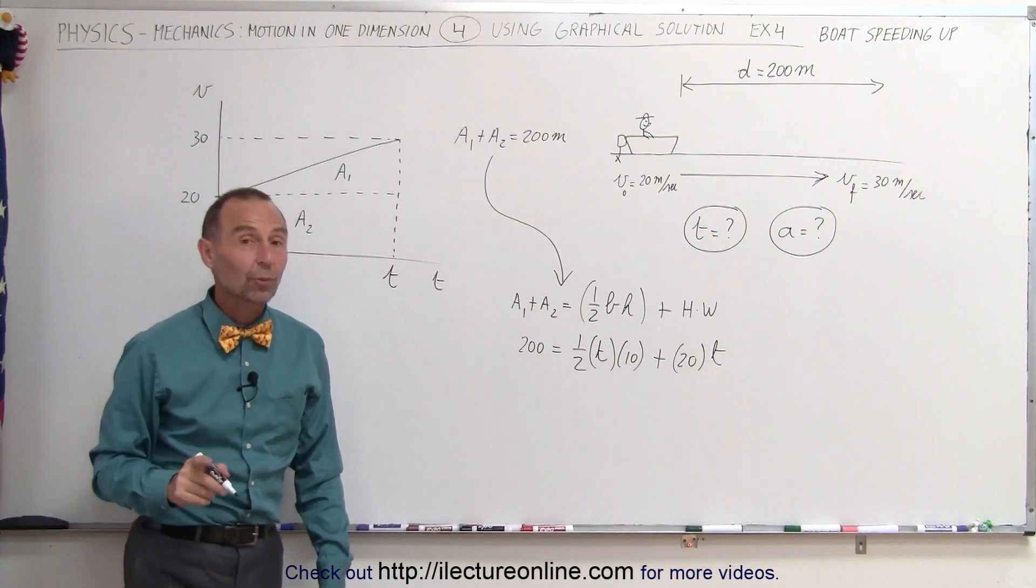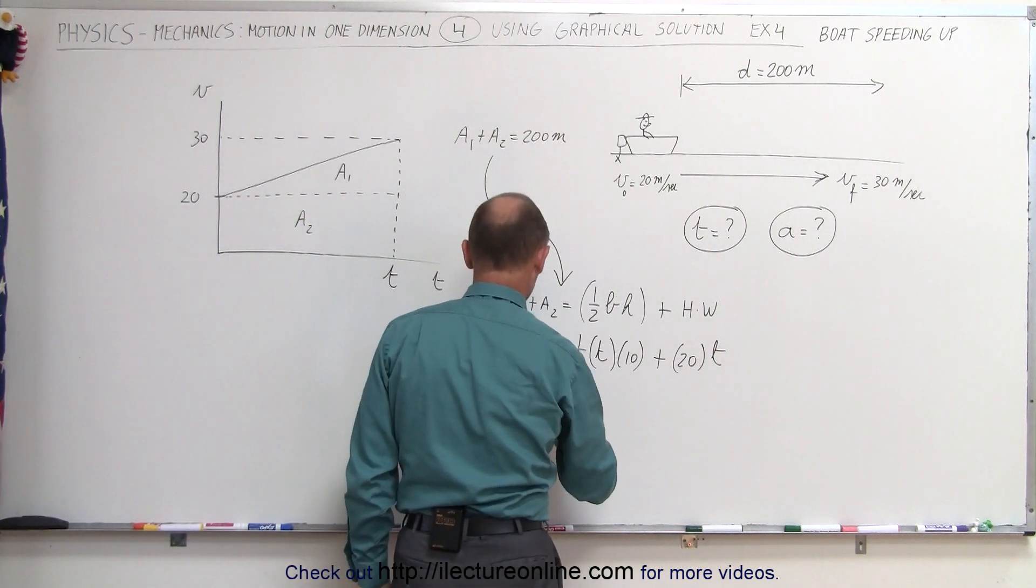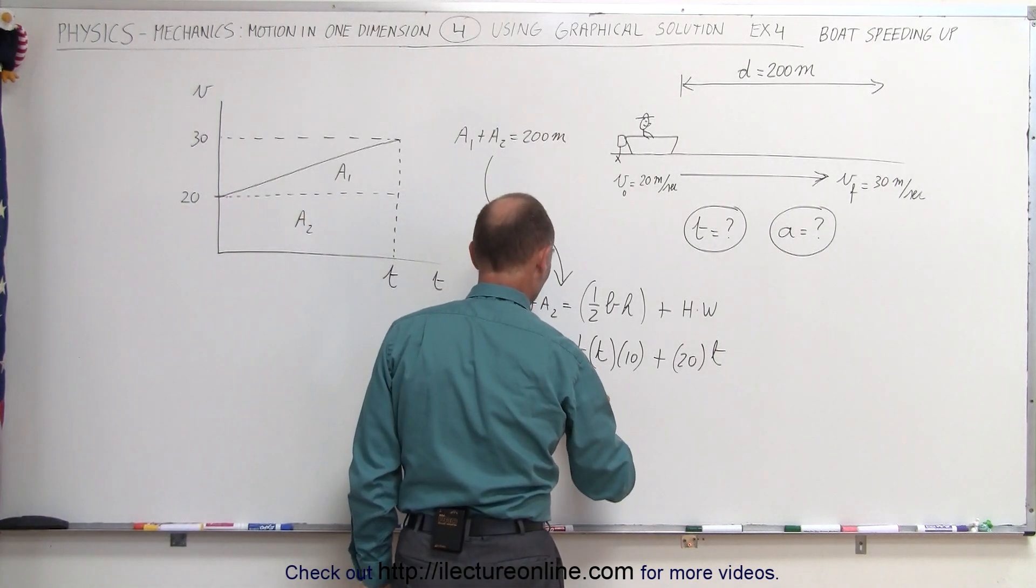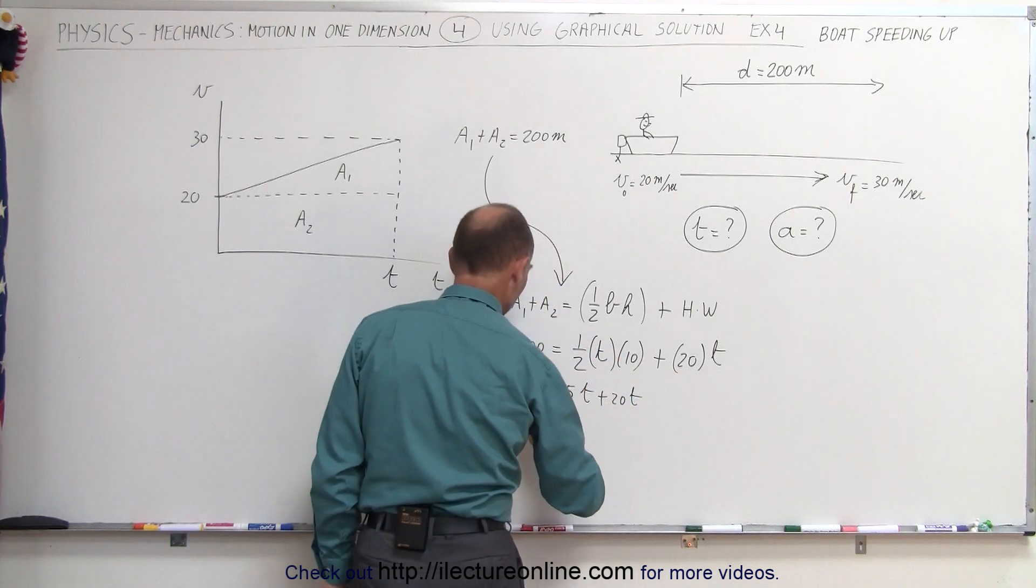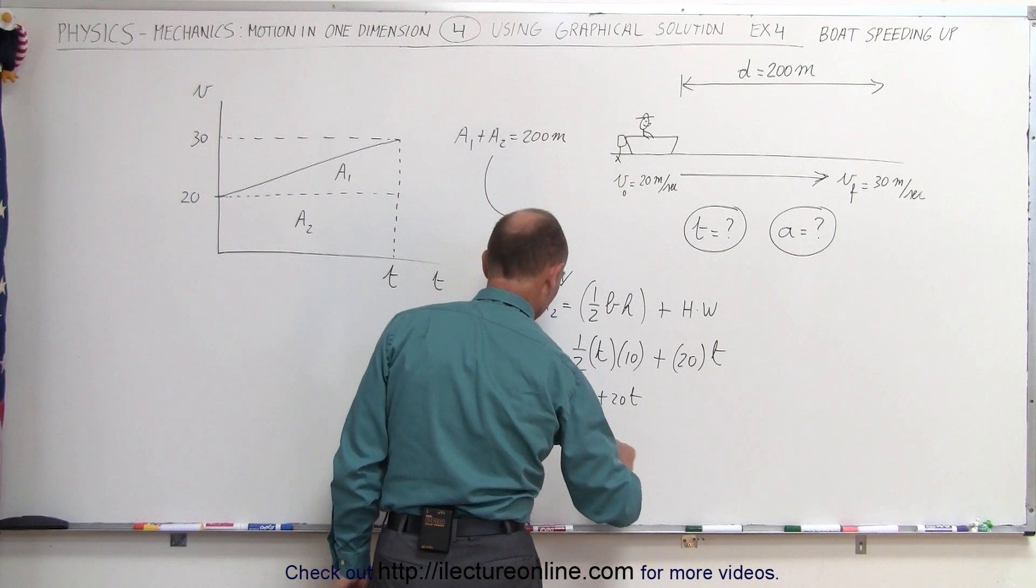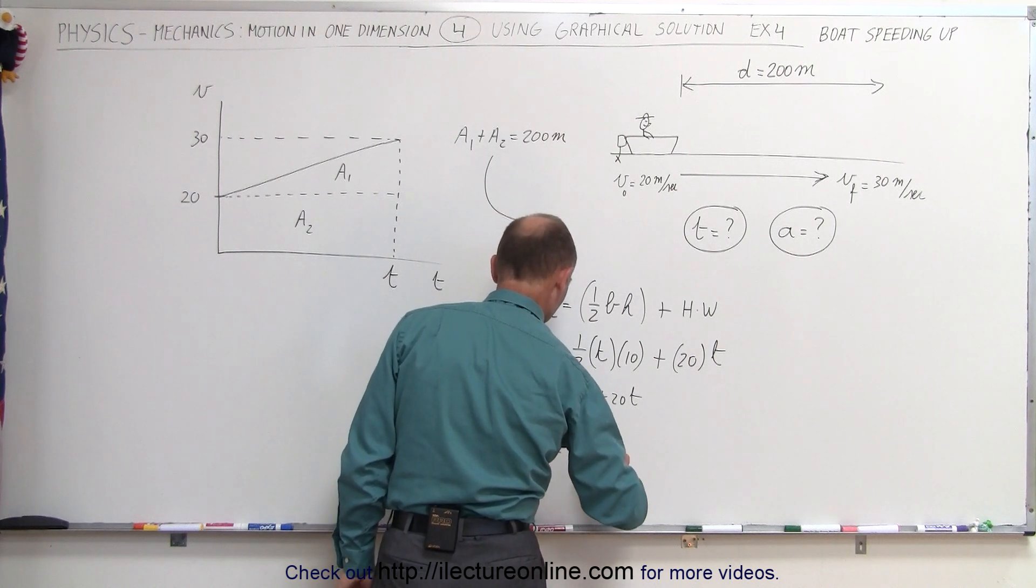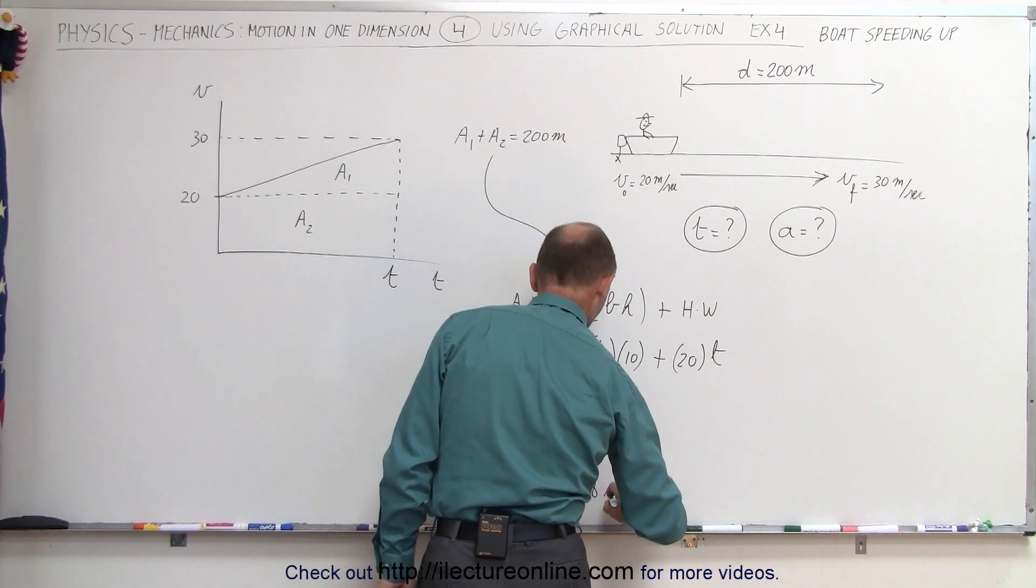And so now realize we have an equation with only time and we can easily solve that. So we have 200 equals 5t plus 20t. Reversing the equation, 25t is equal to 200. Divide both sides by 25 and we then say that t is equal to 8 seconds.